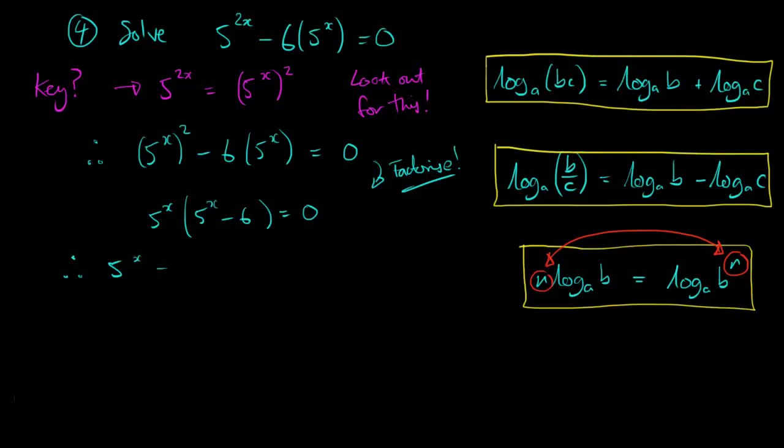So one of these two things must be 0, either 5 to the power x equals 0, but we're going to reject that because there's no power that x could be to make 5 to the power x 0, or 5 to the x must equal 6. So that's the only possible solution.